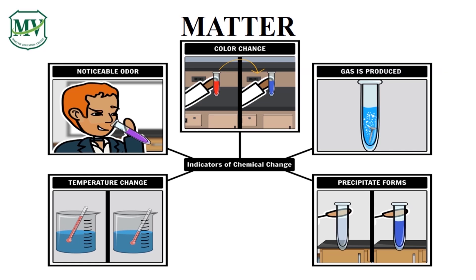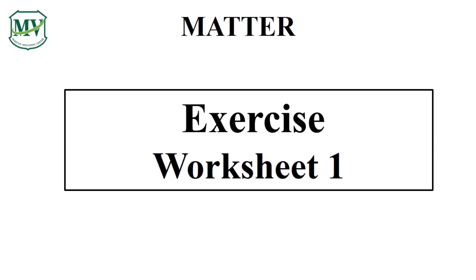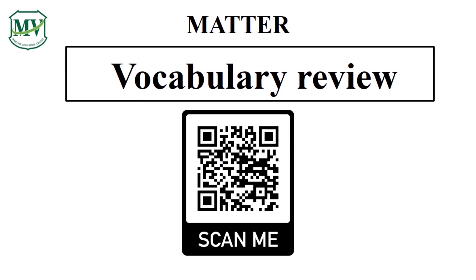This illustrates some of the indicators of a chemical change. What are they again? Can you please read? Fantastic! Please answer worksheet number one. Get your smartphone and try scanning this QR code and review the vocabularies you have learned.